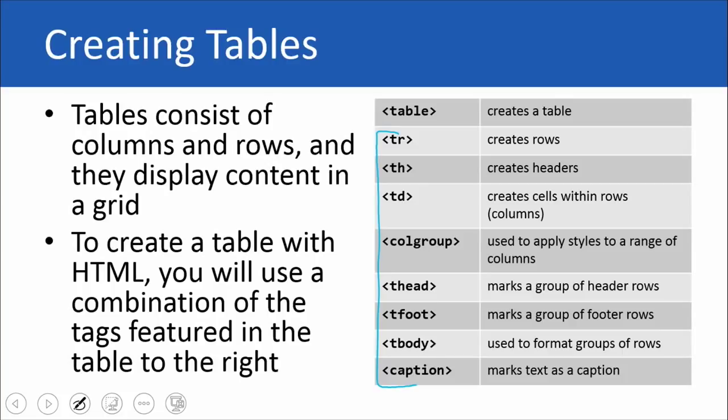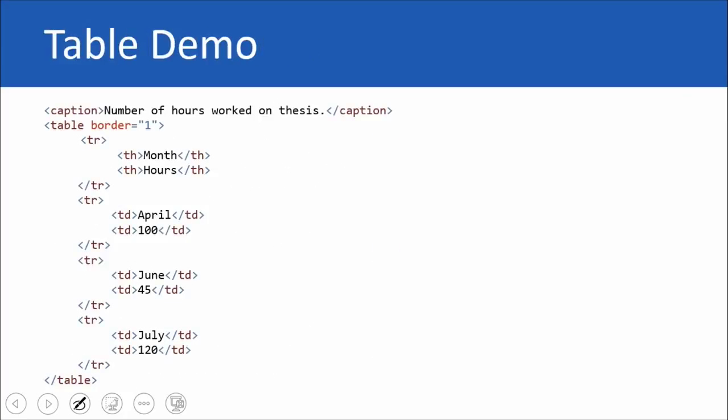Next, if you want to style columns in a particular way, you can go ahead and group them together using the colgroup element. And then, of course, we have different ways to mark groups of headers, header rows, footer rows, the body, and then also providing a caption. I'll show you how to use a couple of those things here in just a second.